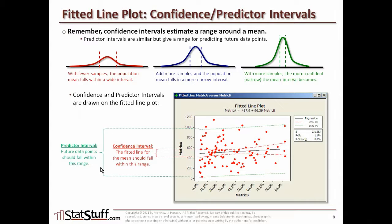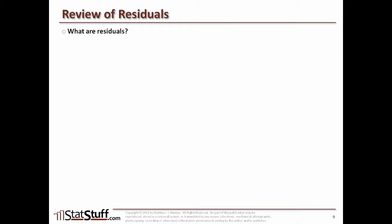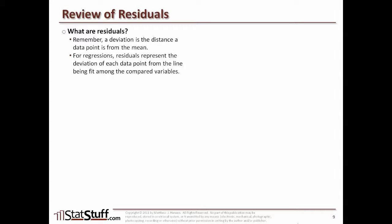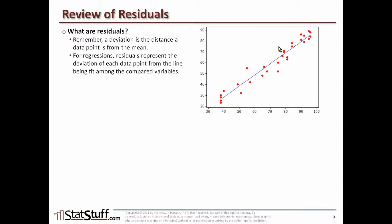The green dashed lines represent the predictor interval — with 95% confidence, future population data points will fall within those much wider green lines. A few points may fall outside, but generally future observations will land within that range. Residuals, meanwhile, represent the deviation of each data point from the fitted line — analogous to how a deviation measures distance from the mean. In a regression, residuals measure the distance each data point is from the line being fit among the compared values.